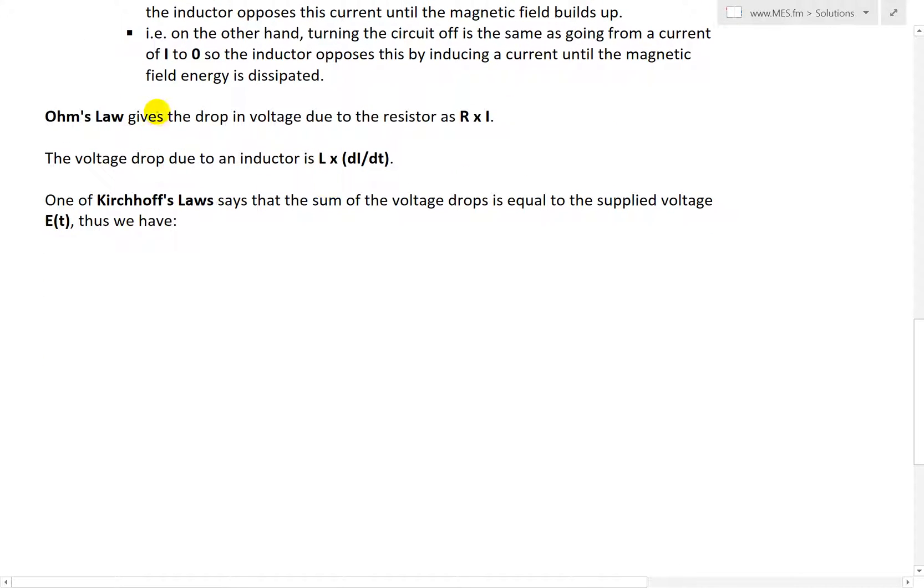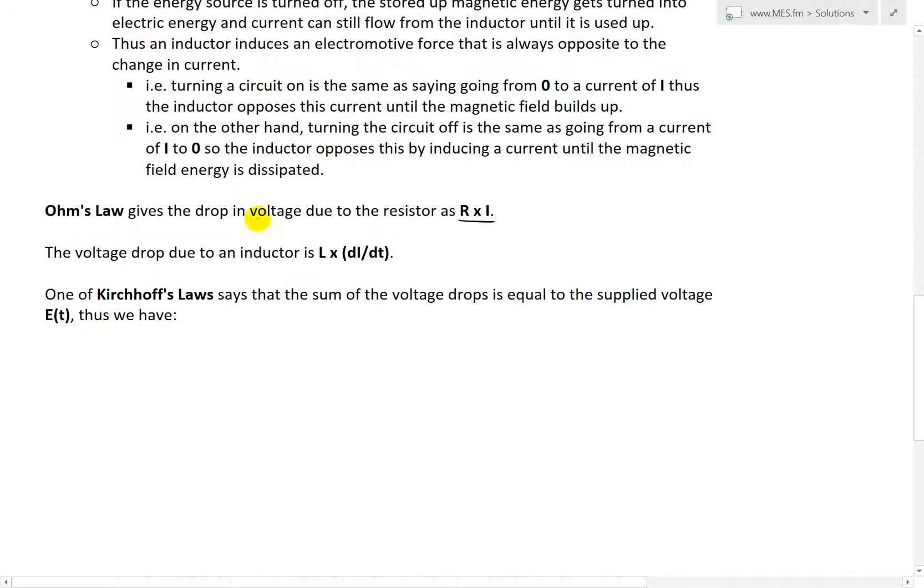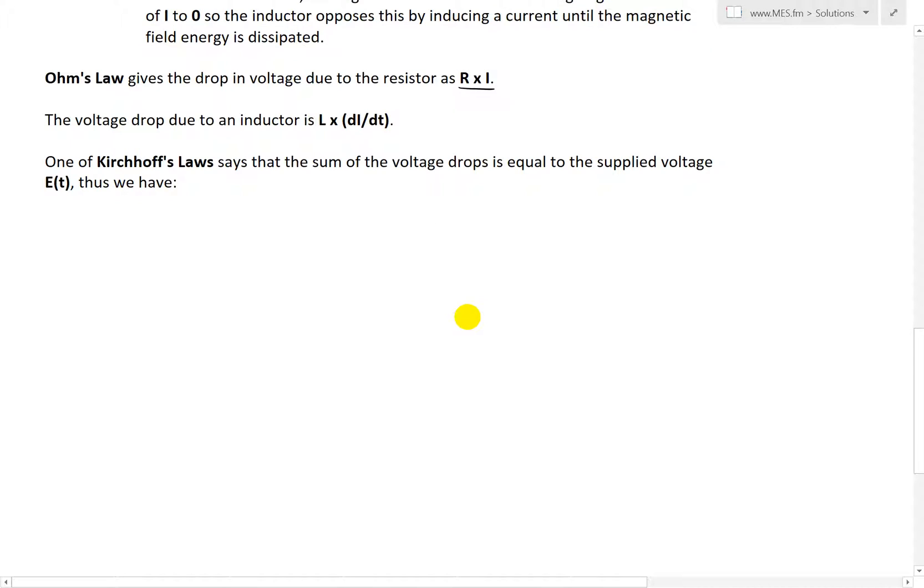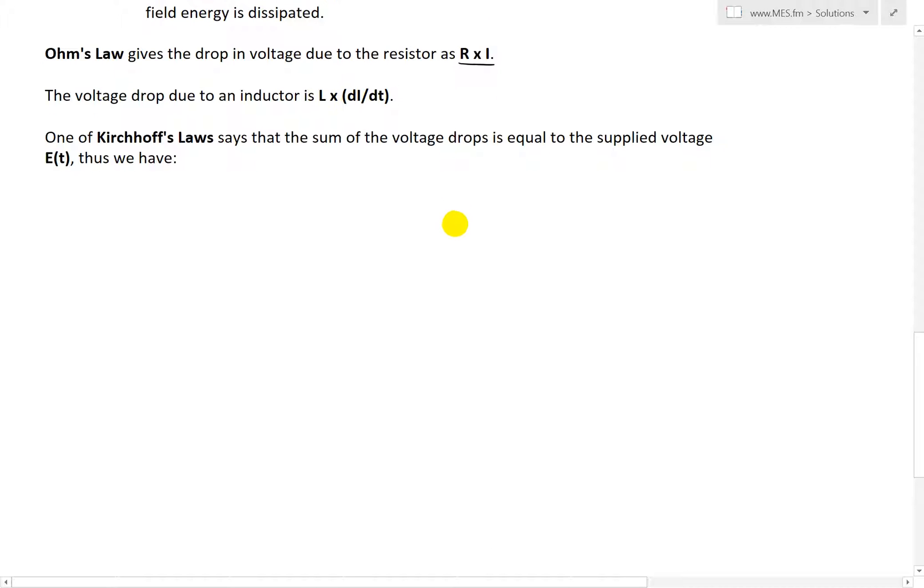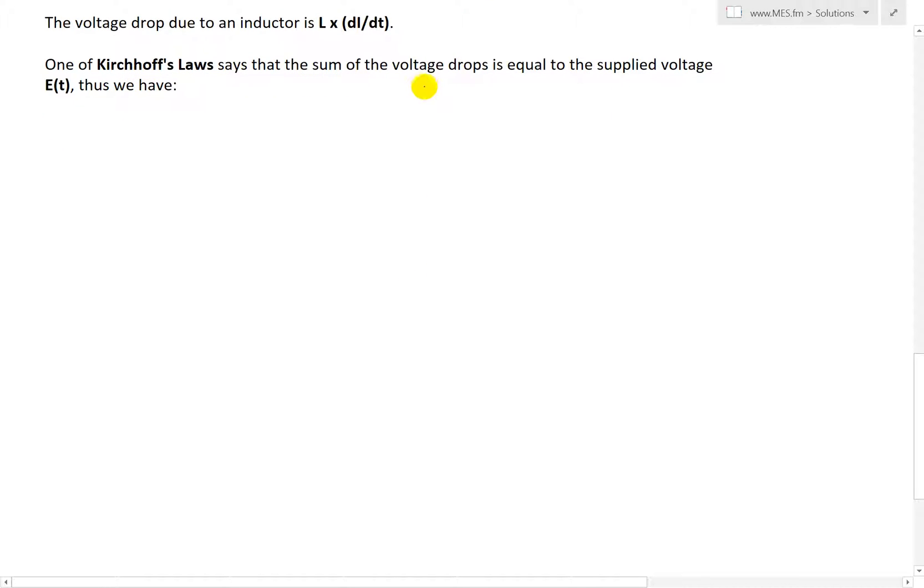Ohm's law gives the drop in voltage due to the resistor as R times I, or the resistance of the resistor times the current. So the resistance times current is equal to the drop in voltage from the resistor due to Ohm's law. And the voltage drop due to an inductor is L times dI/dt - L is the inductance in Henrys times the change in current. One of Kirchhoff's laws says that the sum of the voltage drops is equal to the supplied voltage E(t).